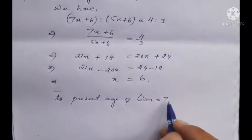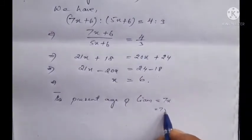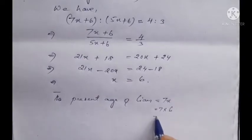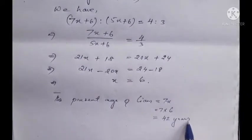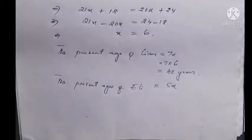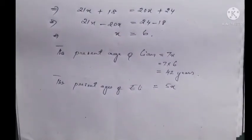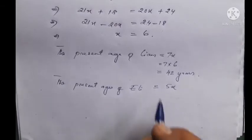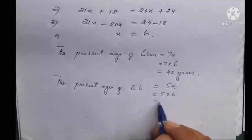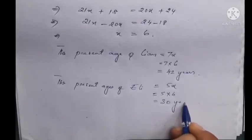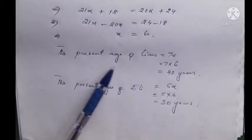The present age of Liam is 7x, which is 7 times 6, equals 42 years. And the present age of Eli is 5x, which is 5 times 6, equals 30 years. So Liam is 42 years old and Eli is 30 years old.